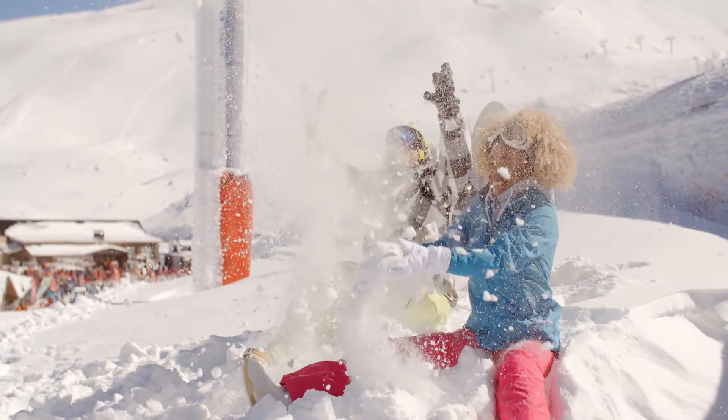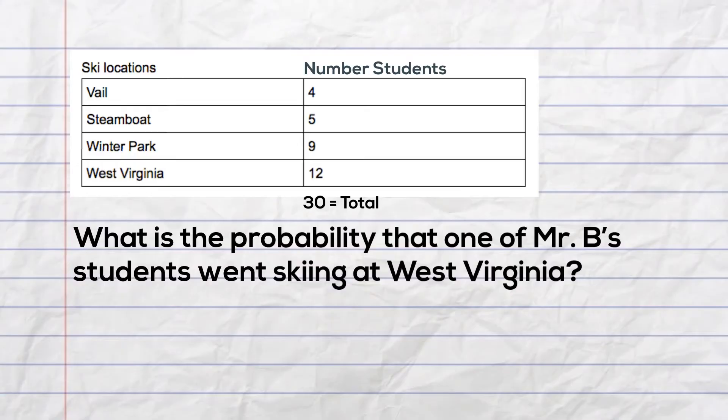Over winter break, students in Mr. B's class went skiing at the following locations. What is the probability one of Mr. B's students went skiing at West Virginia?